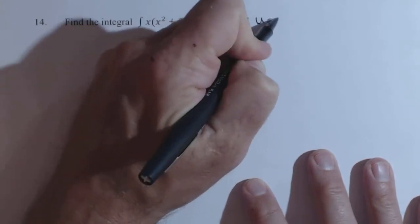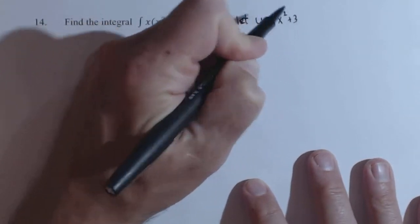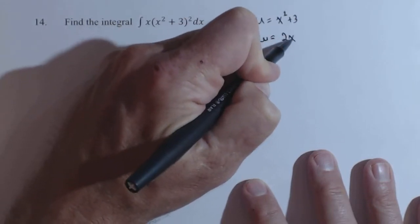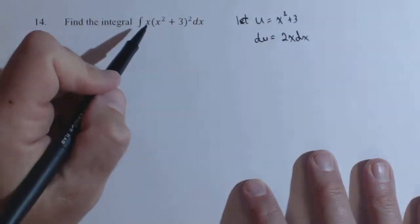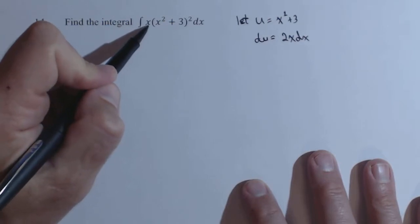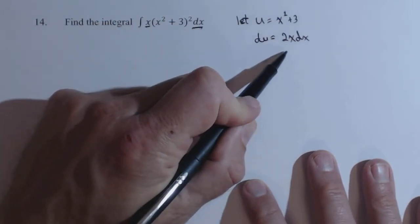So we're gonna let u equal x squared plus three, and then our du is two x dx. Now, as you can see, we see the x dx, but the two isn't quite in there.